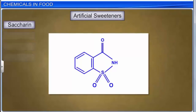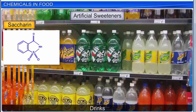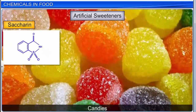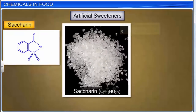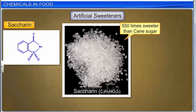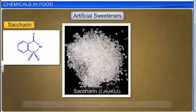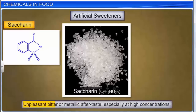Saccharine is one of the most popular sweetening agents, used to sweeten products such as drinks, candies, medicines, and toothpaste. It is about 550 times sweeter than cane sugar (sucrose) but has an unpleasant bitter or metallic aftertaste, especially at high concentrations.